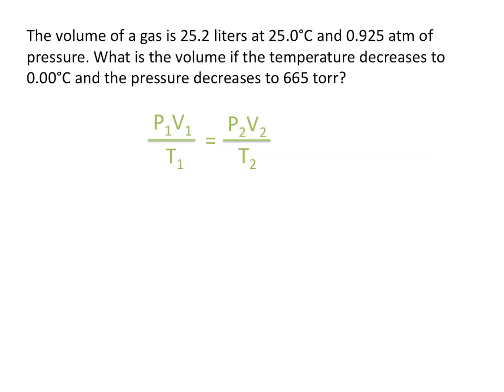For this problem, we're going to use the simplified form of the ideal gas law, p1 times v1 divided by t1 equals p2 times v2 divided by t2. If we rearrange this equation to solve for v2, or the final volume, we get that the final volume equals the initial pressure times the initial volume multiplied by the final temperature, all divided by the initial temperature times the final pressure.